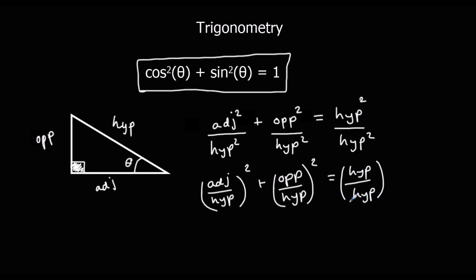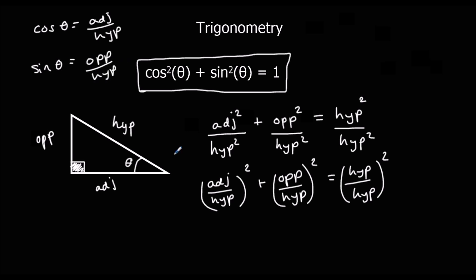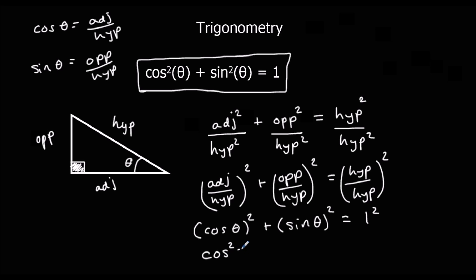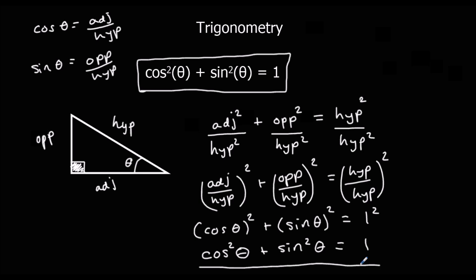Adjacent over hypotenuse is the same as cosθ, so we change that to cos²θ. Opposite over hypotenuse is sinθ, so that becomes sin²θ. And hypotenuse over hypotenuse is 1, so 1 squared is 1. Writing these out gives us cos²θ + sin²θ = 1 — our identity.